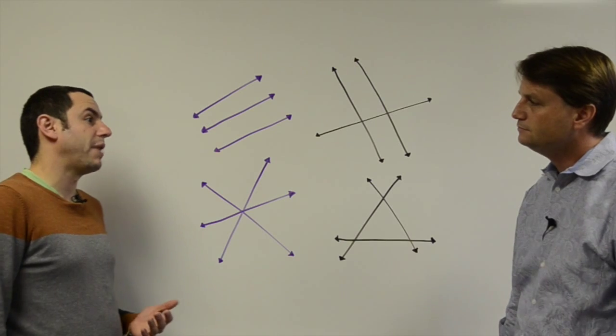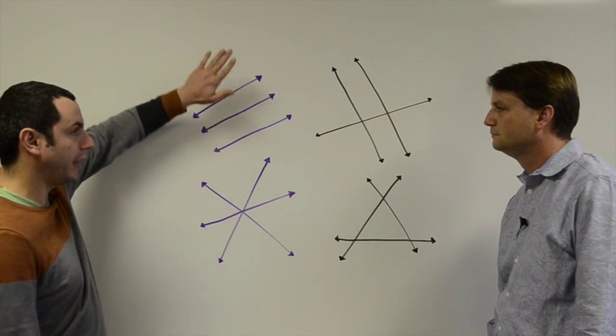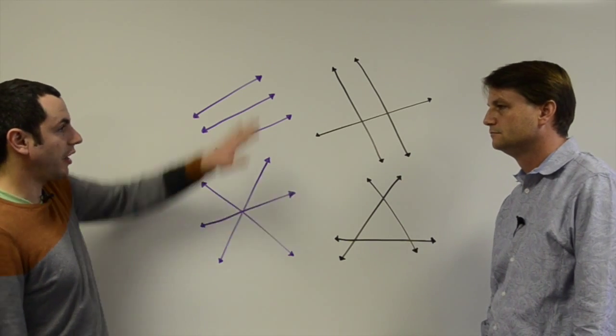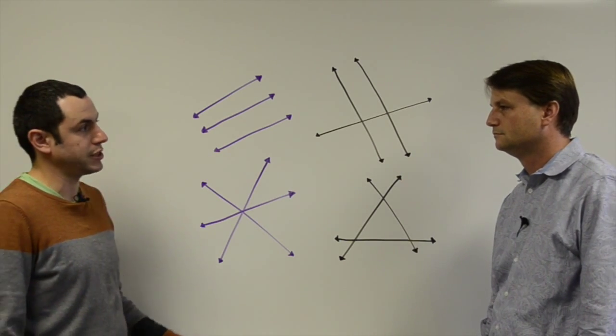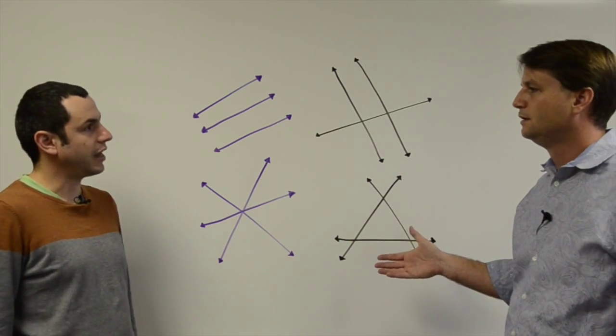We can go up in dimension, for example. Instead of taking a line, which is a one dimensional thing, and the plane, which is two dimensions, we can take planes, two dimensional things, in three space. So three space would be like this room. Exactly.